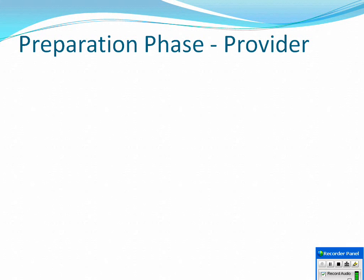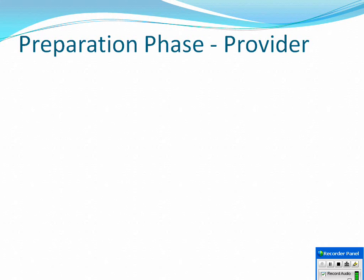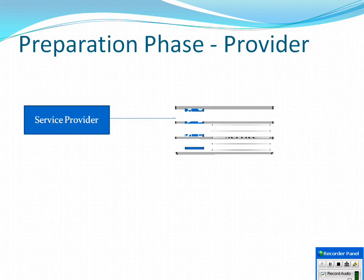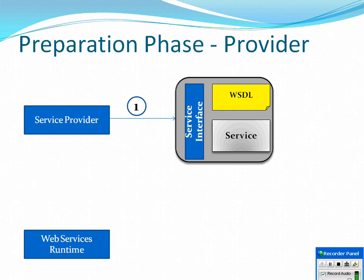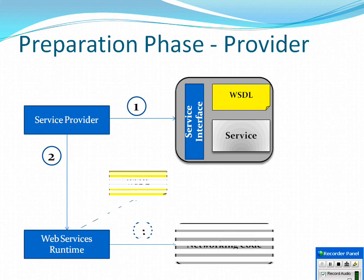In the preparation phase at the producer end, the producer creates a service interface, service implementation, and an endpoint interface. After that, it creates a WSDL document. The next step is using a Web Services Runtime — engines like Apache Axis 2 and Apache CXF. The Web Services Runtime takes the WSDL document as input and generates the networking code for the producer.